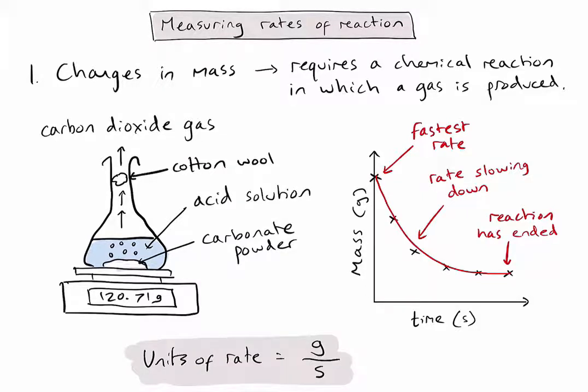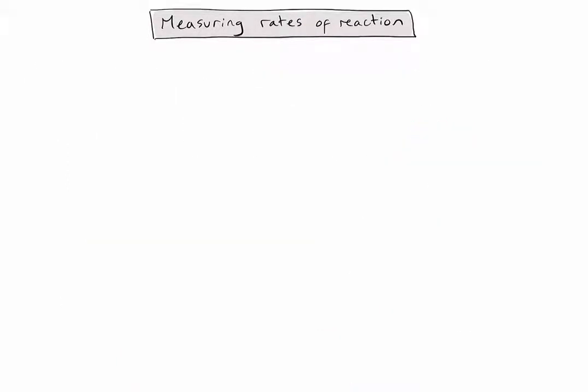Let's now look at a second example. In this example, we're going to be measuring rate by recording the change in volume of a gas produced. And again, this will require a chemical reaction that produces a gas. You might see a setup something like this.